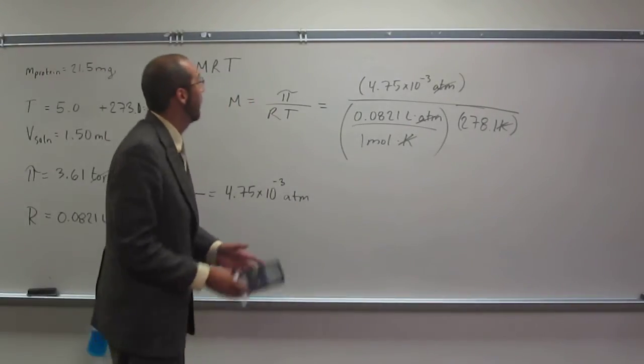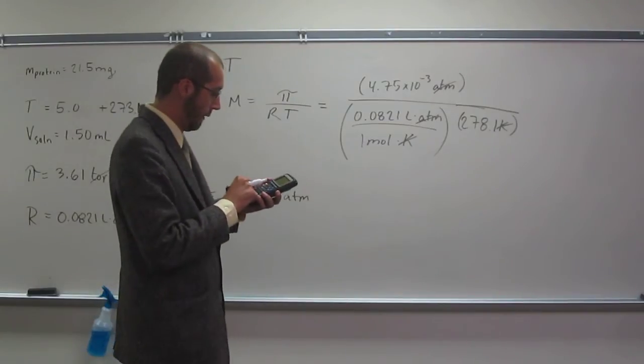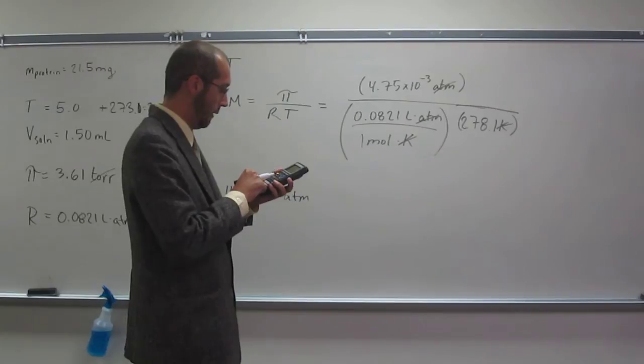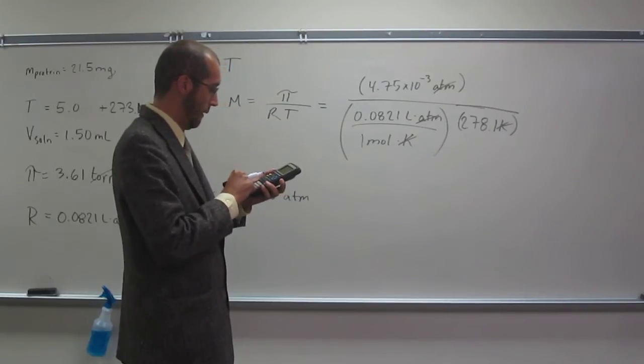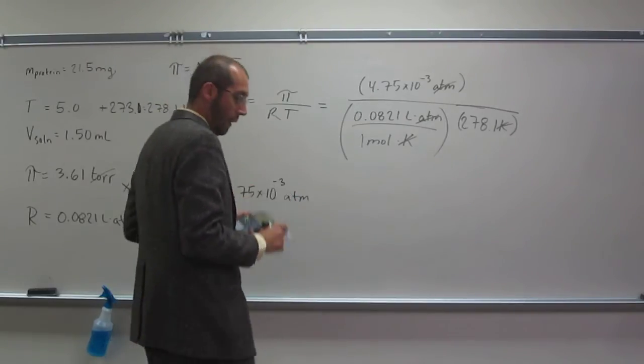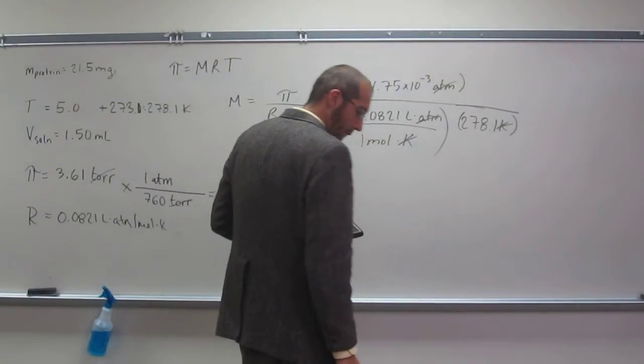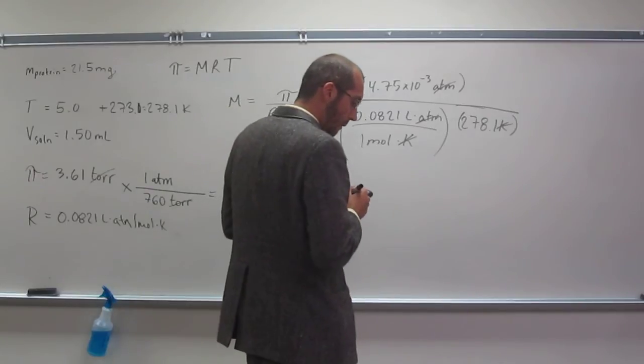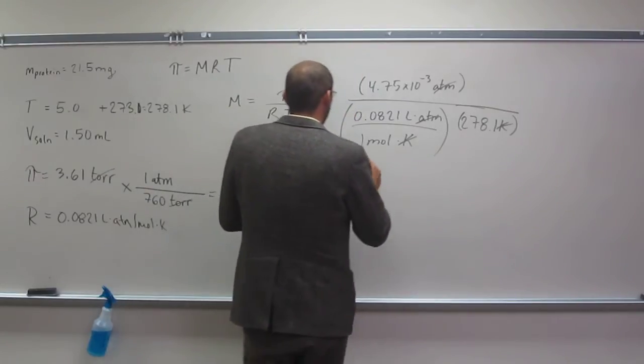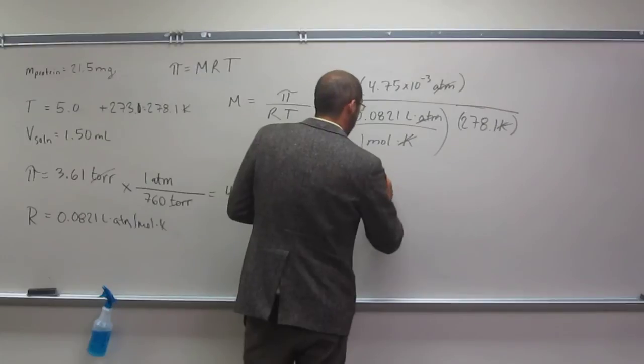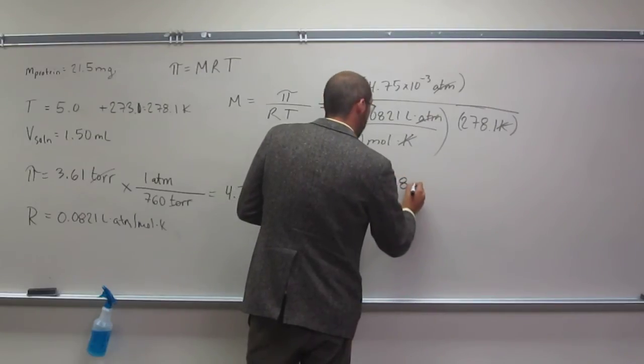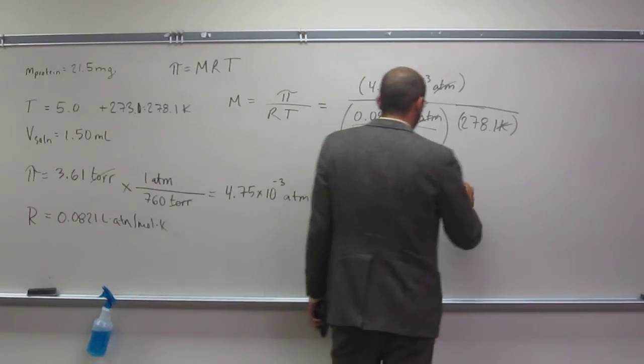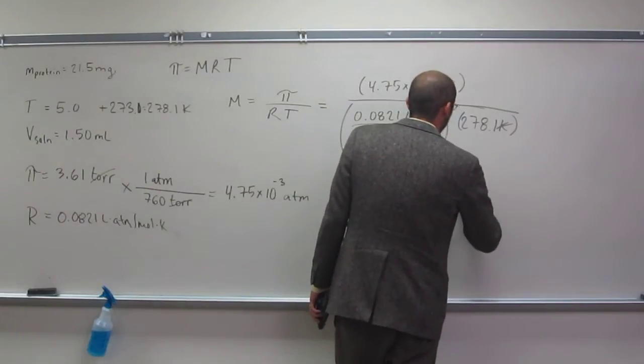So let's go ahead and plug and chug now. So divide it by 0.0821. Then divide that by 278.1. And I get 2.08 times 10 to the negative 4 molar.